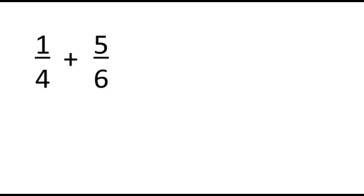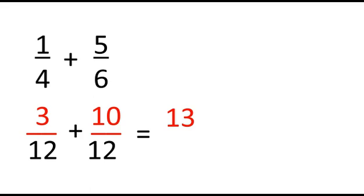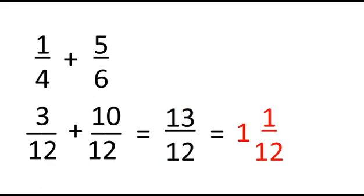Let's have another example: 1 fourth plus 5 sixths. The LCD of 1 fourth and 5 sixths is 12. 12 divided by 4 times 1 is 3. 12 divided by 6 times 5 is 10. So, we have now similar fractions. Let's add 3 and 10 to get 13. Then, copy the common denominator 12. 13 twelfths is an improper fraction, so our final answer will be 1 and 1 twelfth.